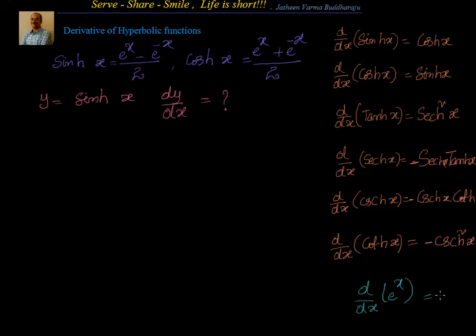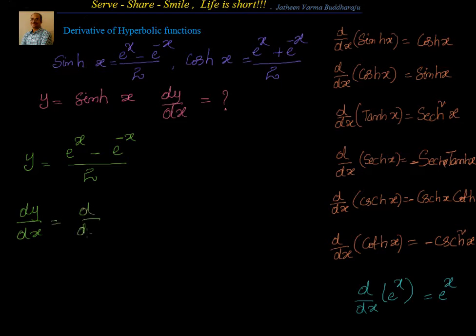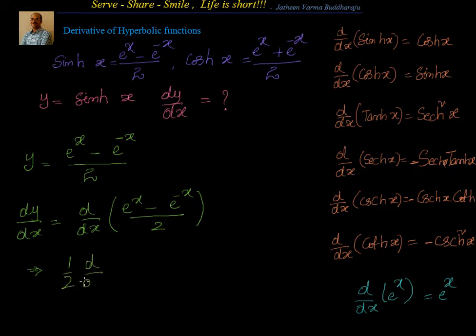So it's very easy to prove them. Let's go ahead and find the derivative of sinh(x) first. We write y = sinh(x) = (e^x - e^(-x))/2. Taking dy/dx, we get dy/dx of (e^x - e^(-x))/2. Since we have a subtraction of two differentiable functions, we can differentiate them separately: (1/2)·d/dx[e^x] minus (1/2)·d/dx[e^(-x)].